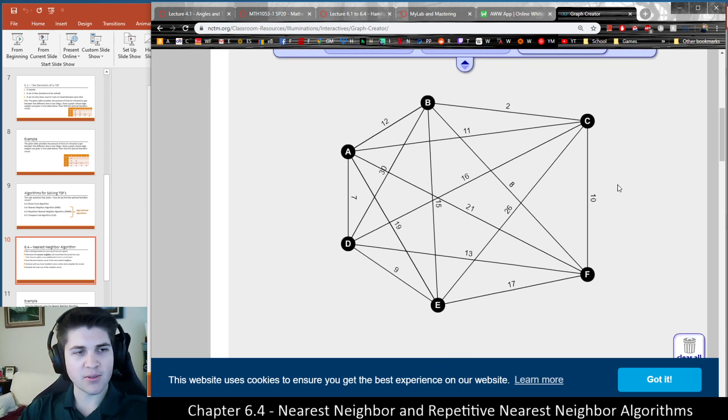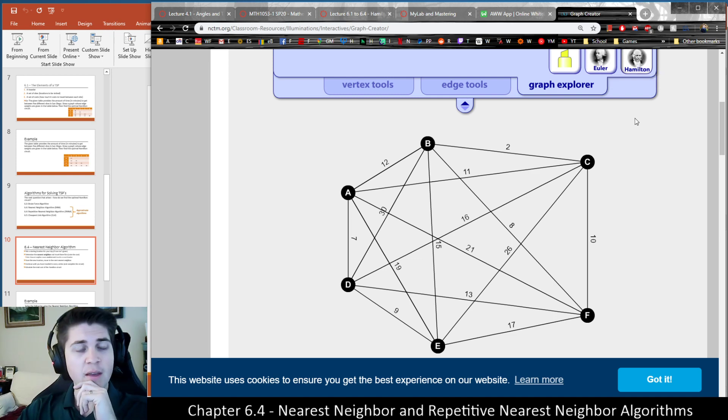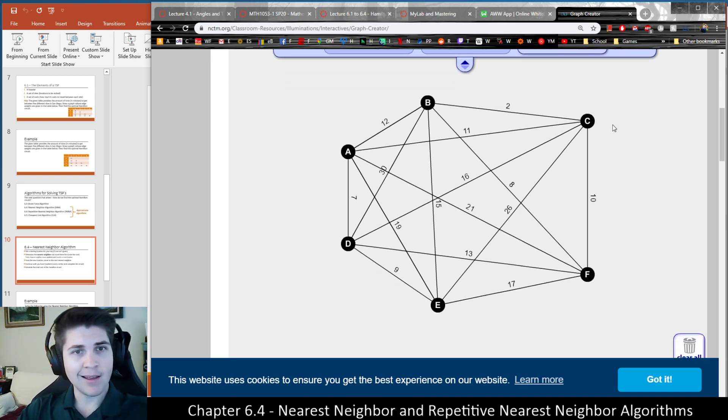And since we're online, I think this resource is... I don't usually use this in class because we just do it by hand. But since we're all working online, might as well get into how we do that as well. Anyways, so we're going to create a Hamilton circuit. Let's just say arbitrarily we're going to start at C as our first location. And our goal is to use the nearest neighbor algorithm to find a cheap Hamilton circuit.